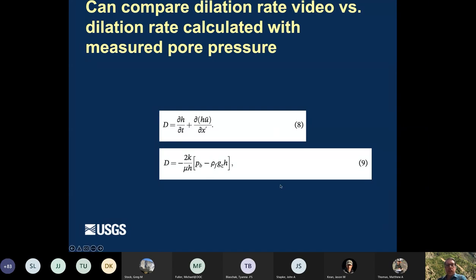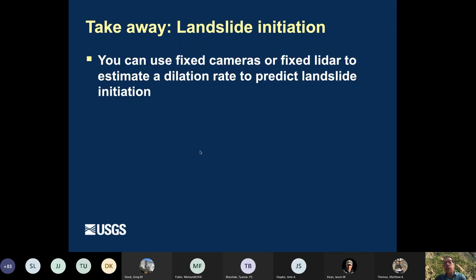What was interesting about this approach is we were able to use this to infer a dilation rate. So Thomas did some really interesting work to figure this out, but we were able to generate a dilation rate estimate based on measurements of the topography from cameras. So he looked at he was able to calculate change in height with time, change in velocity with respect to the X direction downstream. And he could compare that dilation rate based on video observations with the dilation rate that uses measured values like basal pore pressure. And, you know, in the real world, if we have a landslide that you're worried about, you're probably not going to be able to place a pore pressure sensor at the bottom of it if you're really worried that it might fail. So, yeah, we saw pretty good agreement between these two dilation rates. And so that allowed us to kind of show that you can use these fixed cameras or fixed LIDAR to try and estimate dilation rate to try and give you some information predicting landslide initiation.